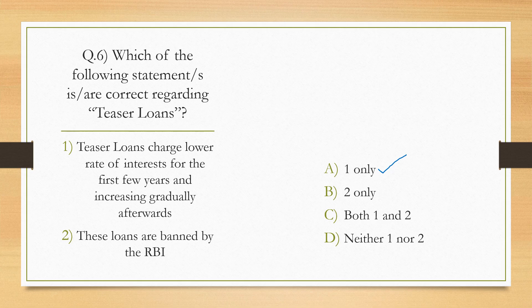Teaser loans — for example, credit cards like Amazon credit cards. Initially, the interest rates are very low, such as one percent or two percent, and then they increase gradually over time.